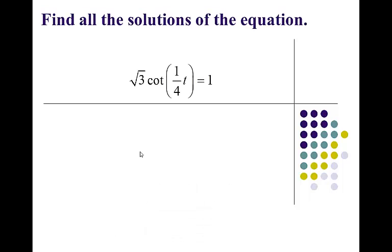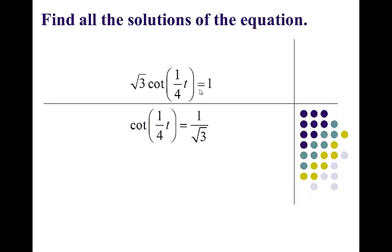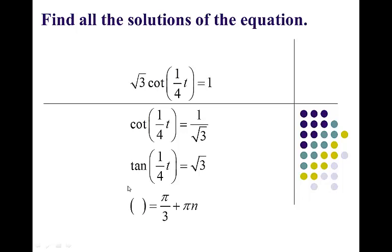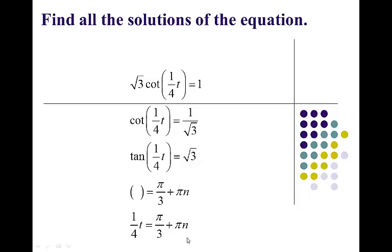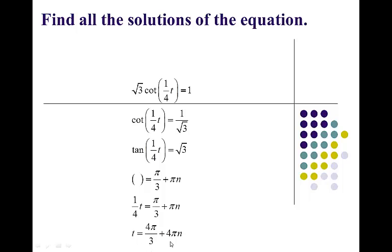Square root of 3 times cotangent of (t/4) equals 1. Divide both sides by square root of 3 to isolate the function — you can never do anything about what's inside. Then take the reciprocal of both sides to turn this into tangent. Notice I didn't take the reciprocal of the angle because you never take the reciprocal of an angle. Angles whose tangent is square root of 3 are in quadrants 1 and 3, thinking 60 degrees. I only need one statement since tangent has a period of pi and the two angles are exactly pi apart. So t/4 equals pi over 3 plus pi n, then multiply both sides by 4, giving t equals 4 pi over 3 plus 4 pi n.